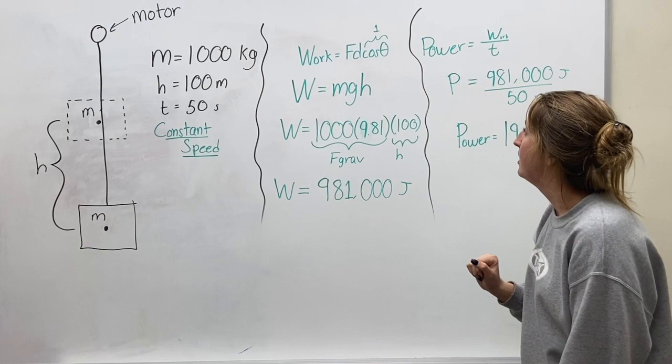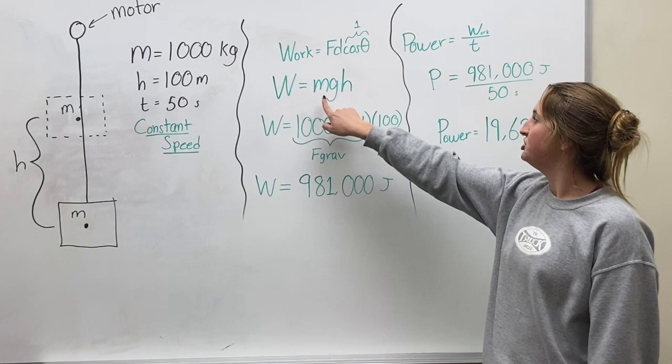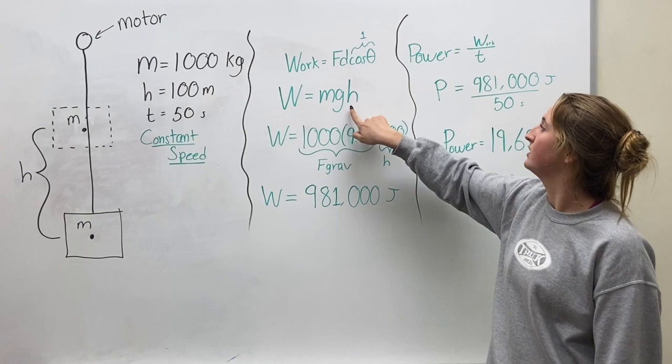So when we're doing F, our force is the force of gravity because the elevator is moving up and the force of gravity is pulling down. So we have m g times h, which is our d. So we have F equals m g, d is our h, which is our displacement.